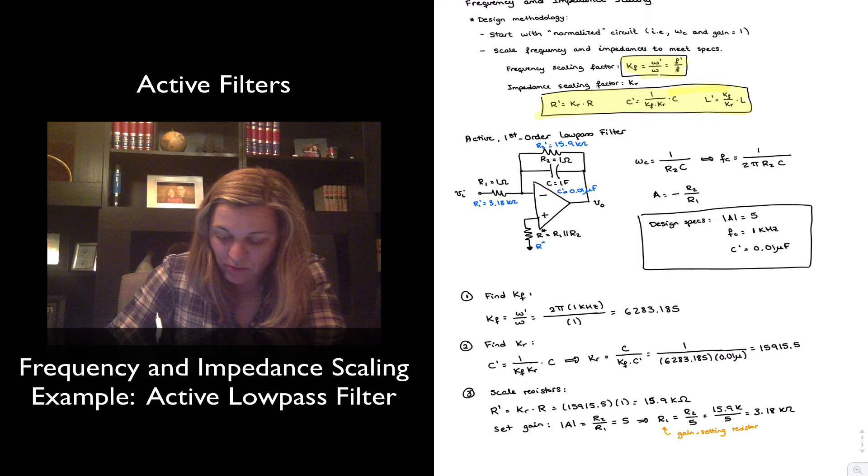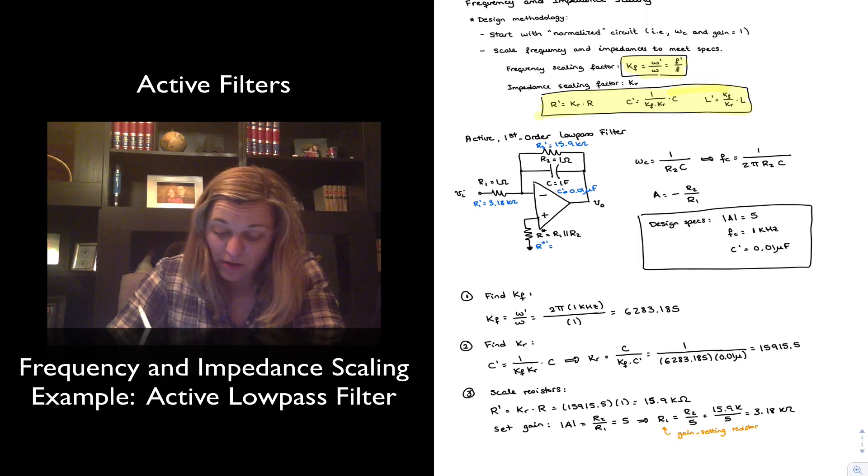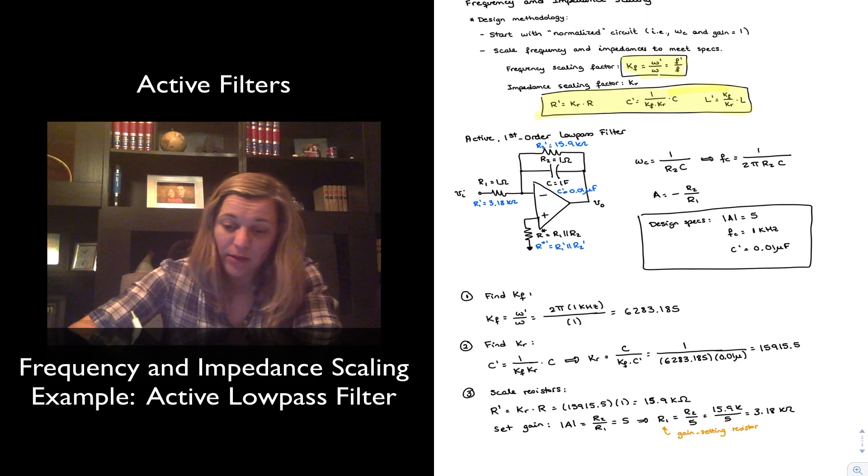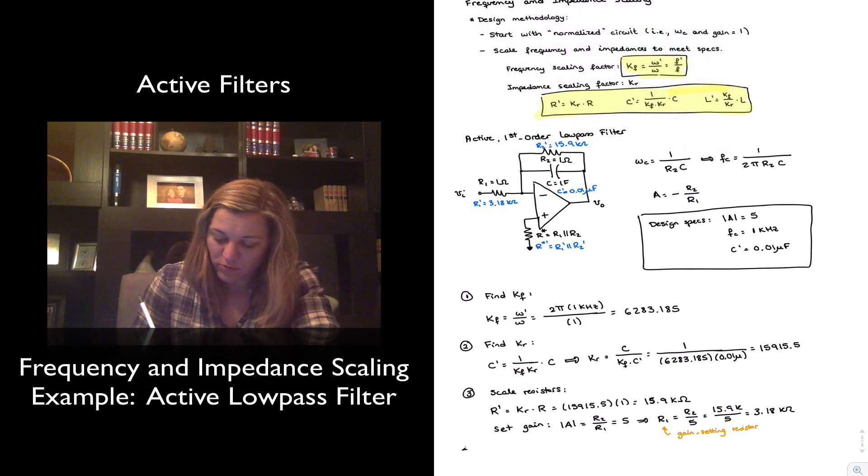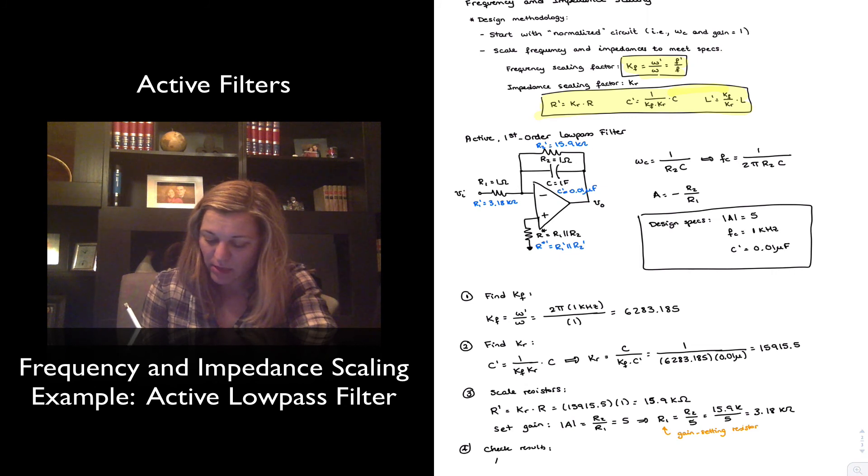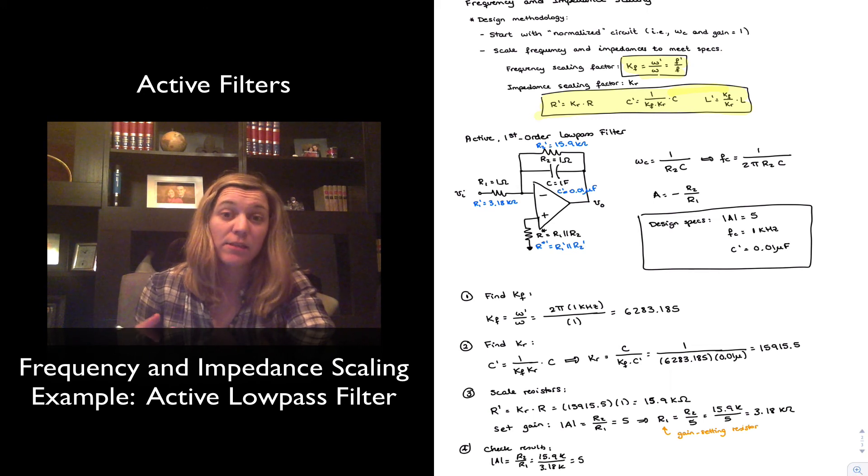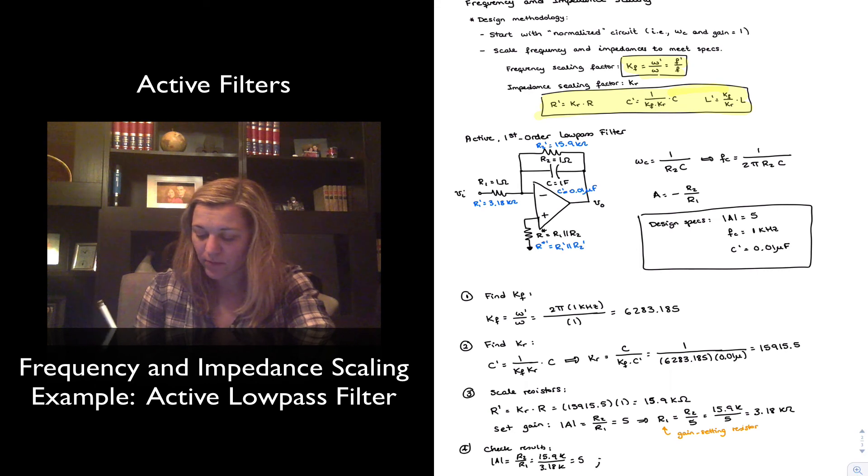Obviously, my R star prime is just going to be equal to R1 prime in parallel with R2 prime. And I can go ahead and run the verification. So basically, check my results by computing both the gain and the cutoff frequency of the new circuits. My gain is going to be equal to an absolute value, R2 over R1, which by design is going to be 5. This is 15.9 K divided by 3.18 K, which is equal to 5. And that's easy to see in the circuit because, again, it is simple. But in more complex circuits, things may not be as simple to visualize.